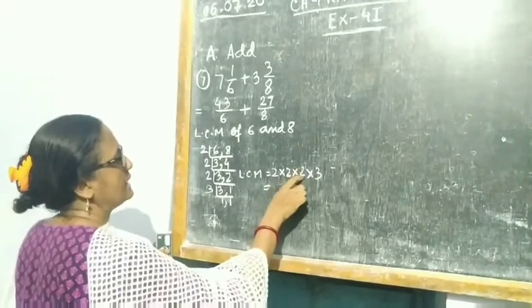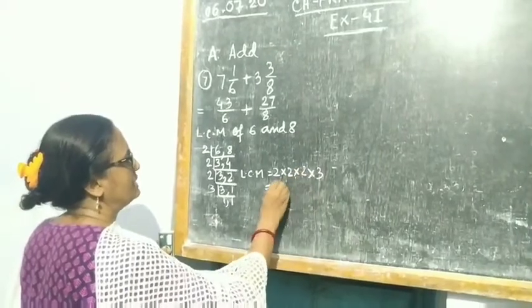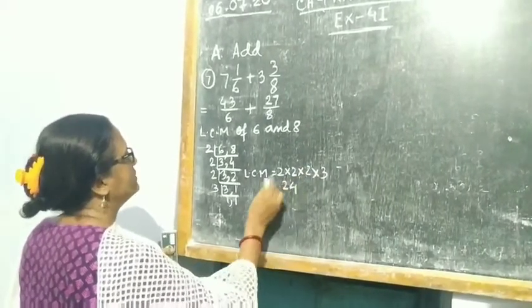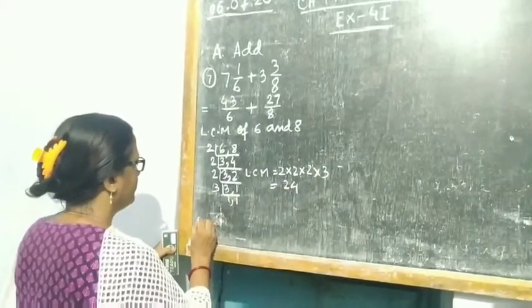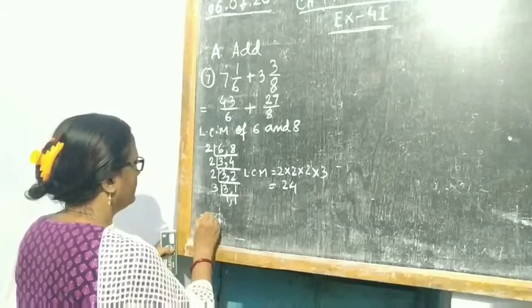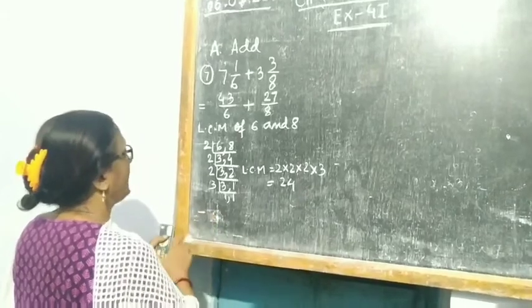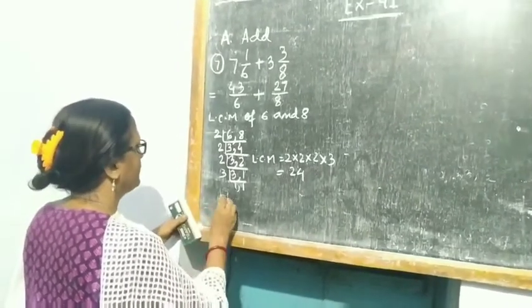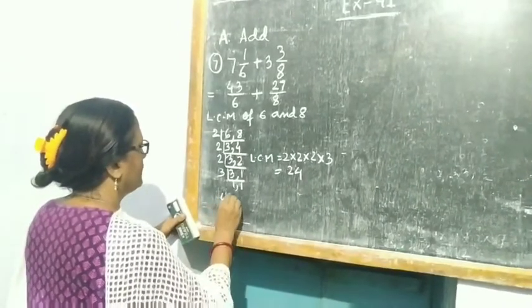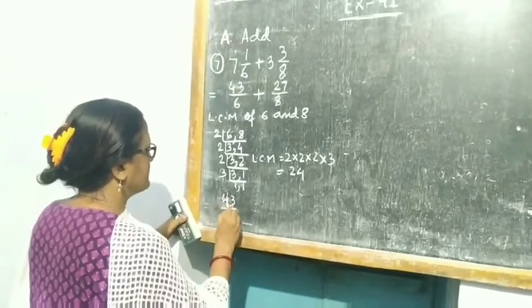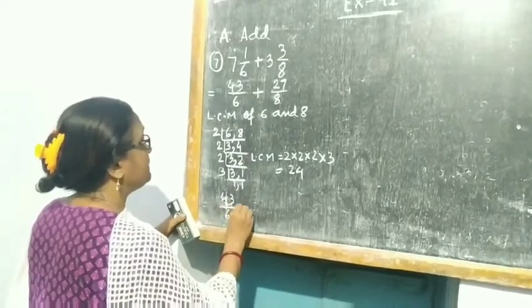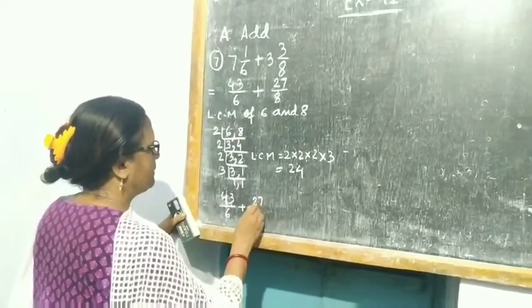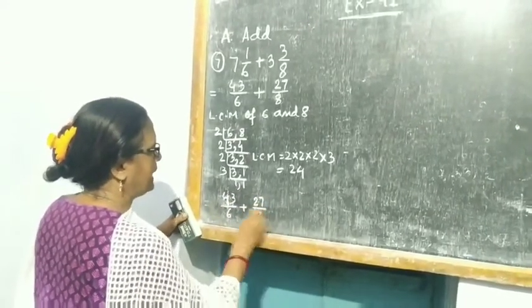So 2 into 2 is 4, 4 into 2 is 8, 8 into 3 is 24. Now children, you write the sum: 43 by 6 plus 27 by 8.